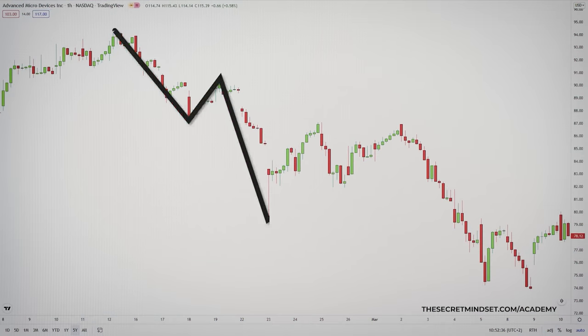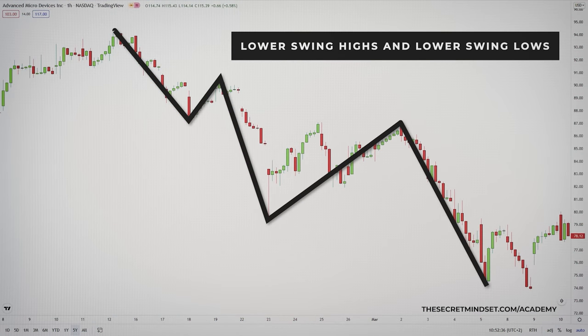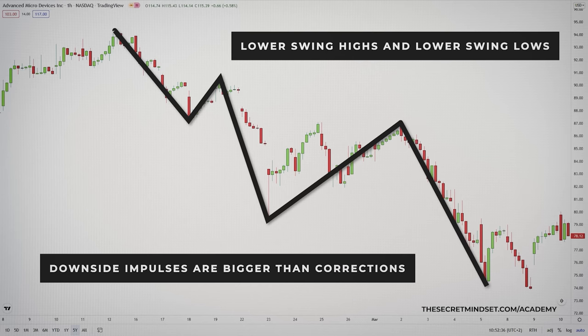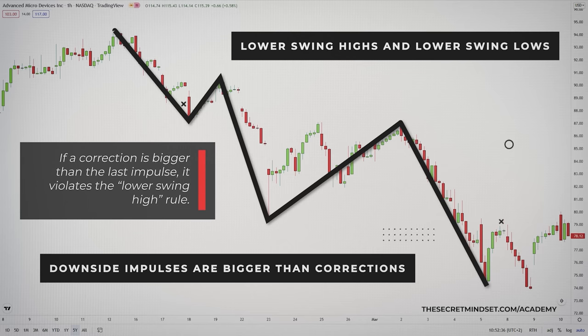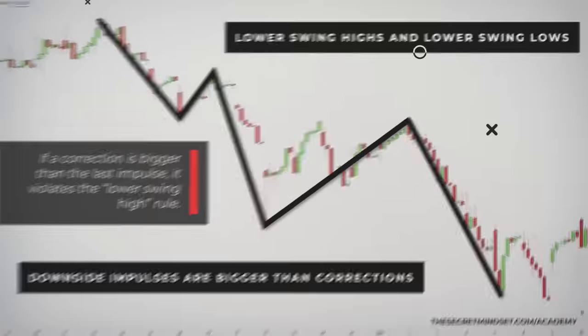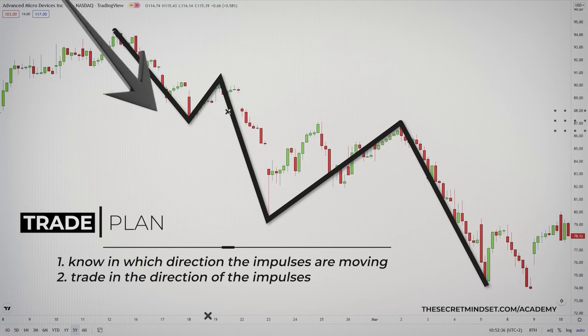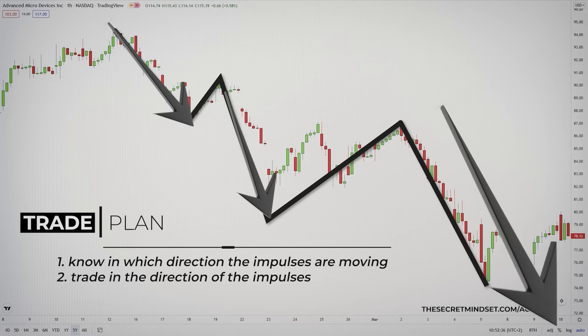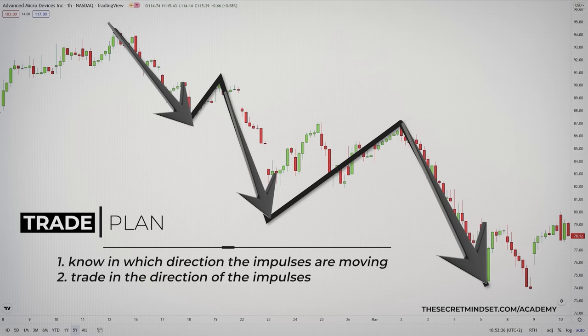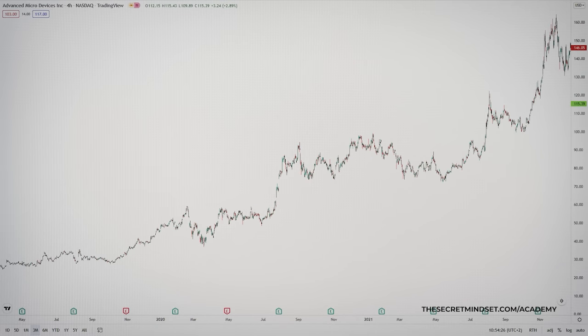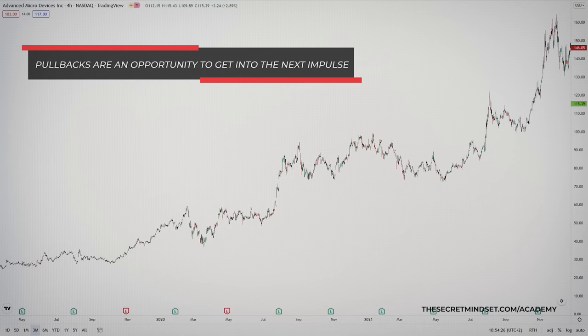Downtrends occur when the price is making lower swing highs and lower swing lows. The impulses to the downside must be larger than the corrections higher. If a correction is bigger than the last impulse, it violates the lower swing high rule. At all times, you must know in which direction the impulses are moving. During a correction, remind yourself that you only want to trade in the direction of the impulses, and don't let the pullback scare you — this is your opportunity to get into the next impulse, even though it feels like the price is moving against you.